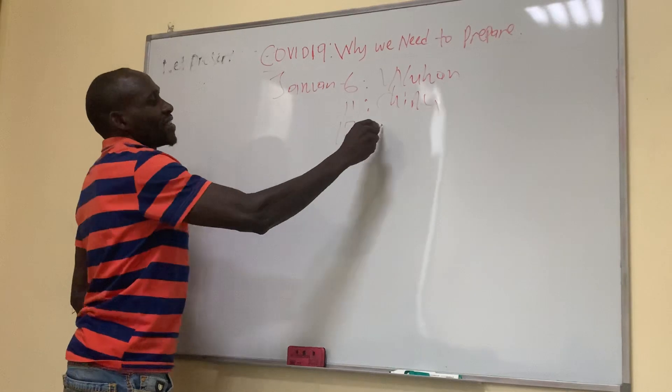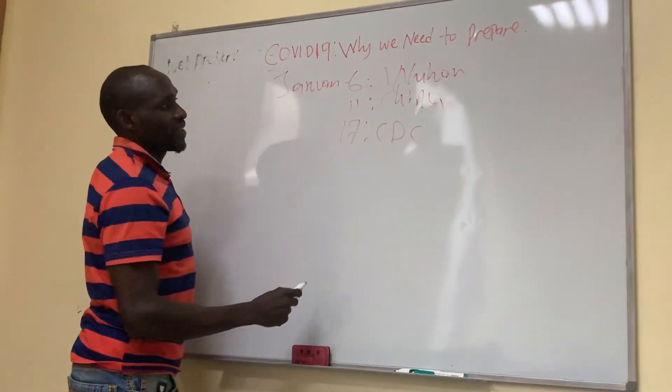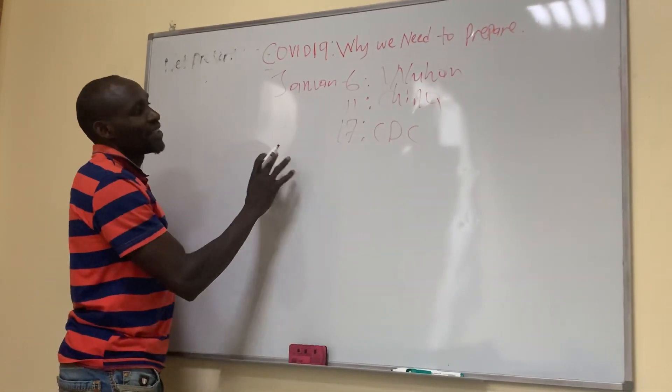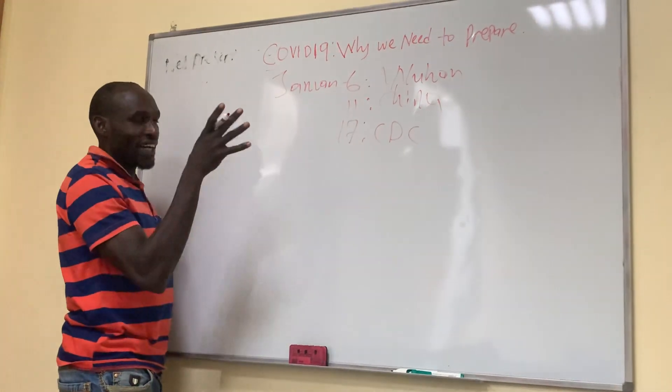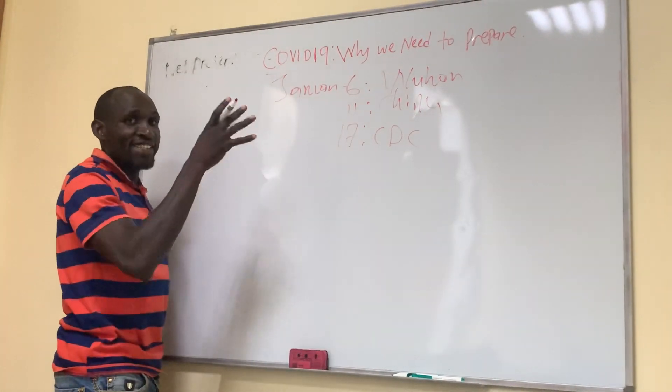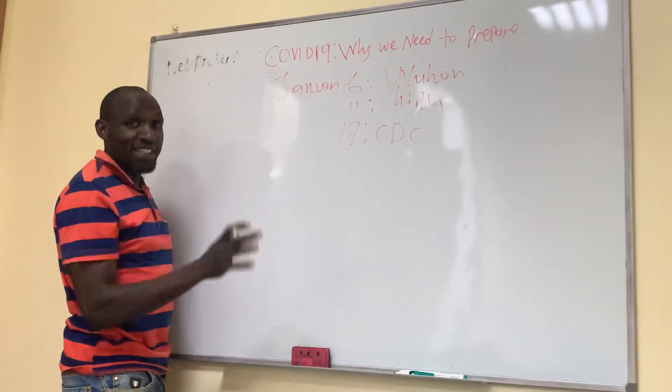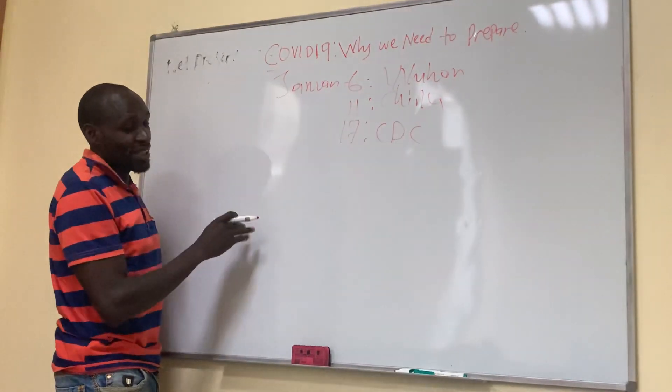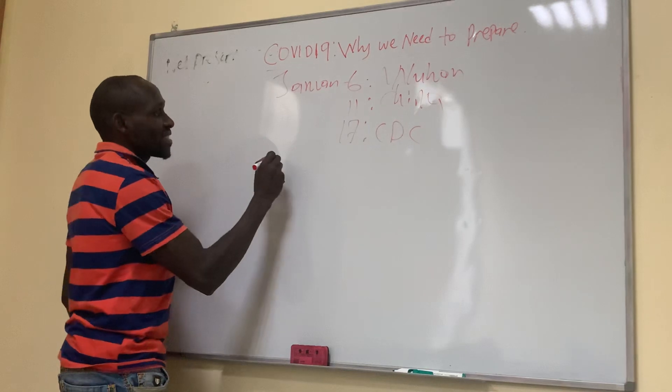January 17th, CDC, which is in charge of health in the U.S., came up with emergency airport entry checkpoints to check whether people were having cases or not. That was January 17th. The first case in the U.S. was January 21st.